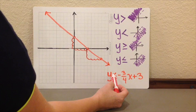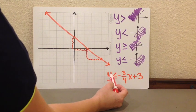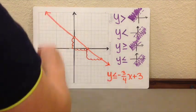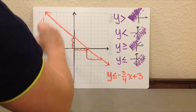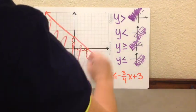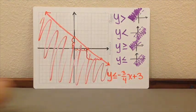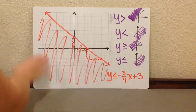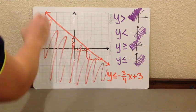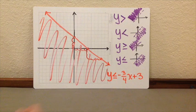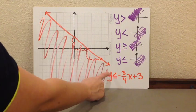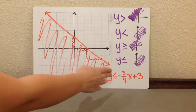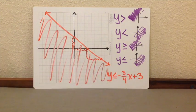And since y is less, we are going to shade under the line or the bottom piece of your graph. Meaning that any point in this shaded area or in the solid line will be a solution for your inequality y less or equal than negative 3 over 4x plus 3.